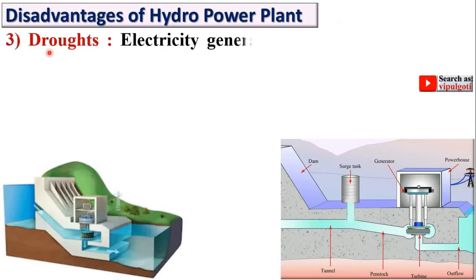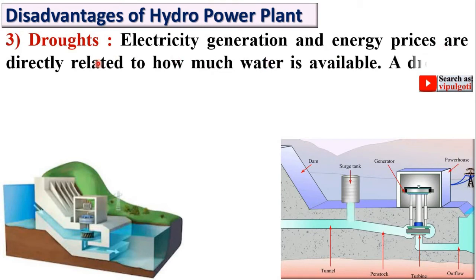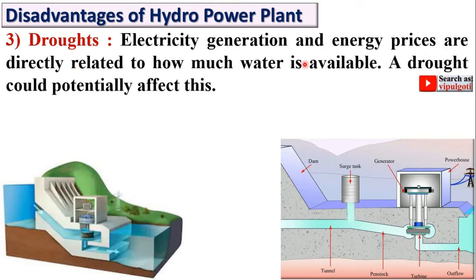Next: Droughts. Electricity generation and energy prices are directly related to how much water is available. A drought, meaning a shortage of rainfall, will directly and negatively affect the output of a hydro power plant.